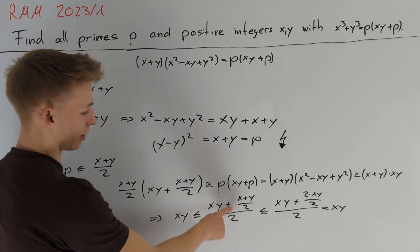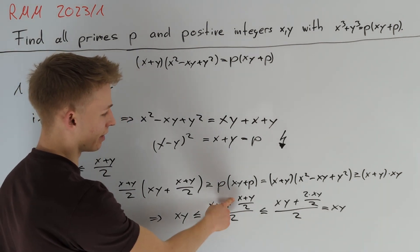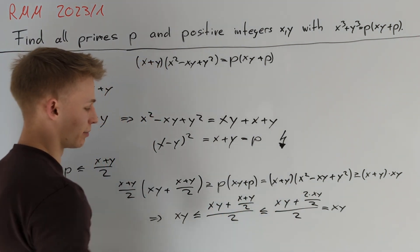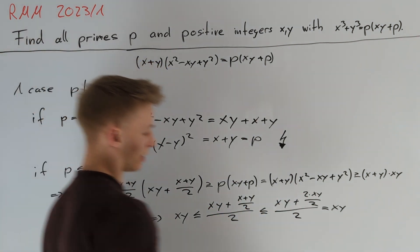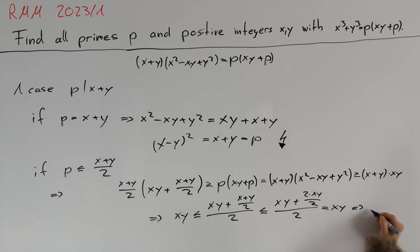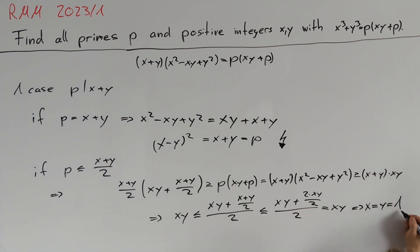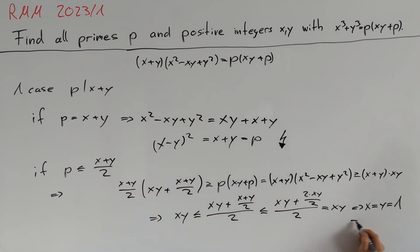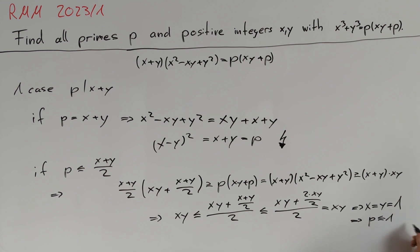Equality means the only possible case is x = y = 1. Since p ≤ (x + y)/2, this gives p ≤ 1, which is clearly a contradiction.